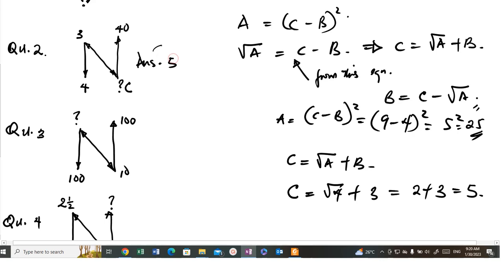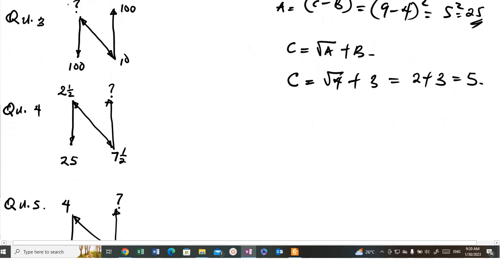Now, for this, we are looking for B here. B is equal to C minus square root of A. And C is 10 minus square root of A, which is 100. So, 10 minus square root of 100 is 10. So, this is equal to 0. So, the answer for this is 0.